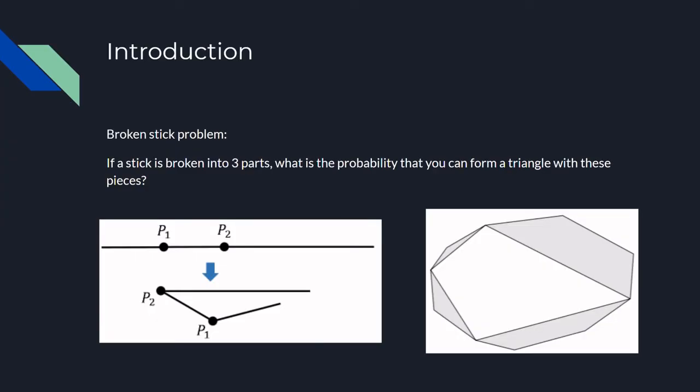The broken stick problem is a classical problem in mathematics. The original problem states that to find the probability of a triangle that is formed from breaking a stick into three pieces.